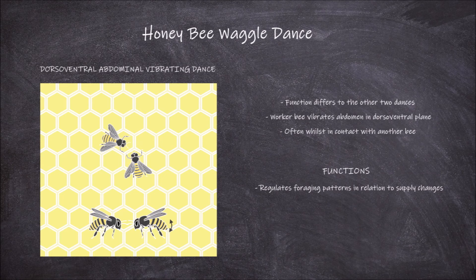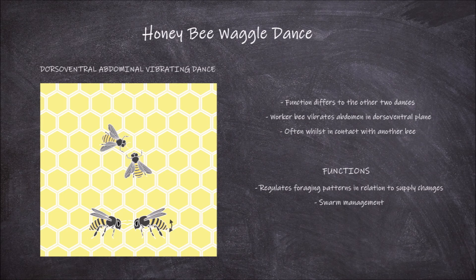This vibration dance is also used in swarm management. This vibration dance is used on the queen during the period when new queens are being reared. This vibration on the queens is thought to control the timing of swarming. Swarming is the process in honeybees where the hive splits into two, and often occurs after this dance on the queen has stopped. The queen will leave with the swarm to form a new hive, and the new queens laid by the existing queen that is now left will take over the existing hive.